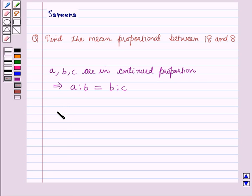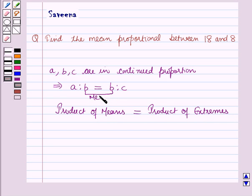We also know that product of means is equal to product of extremes, where these two terms are called the means and these two terms are called the extremes.